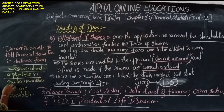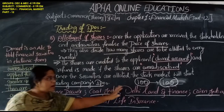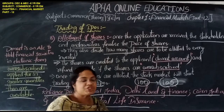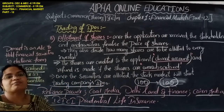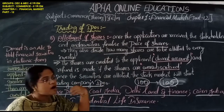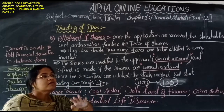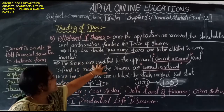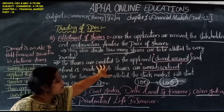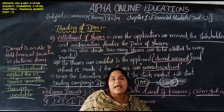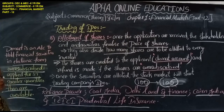When shares are oversubscribed, applicants are in greater quantity than the shares available. For example, if there are 100 shares but more than 100 applicants, a refund is given to the unsuccessful applicants. The selected applicants have their shares credited directly to their demat accounts. This is the overall trading process of IPOs in the stock market.